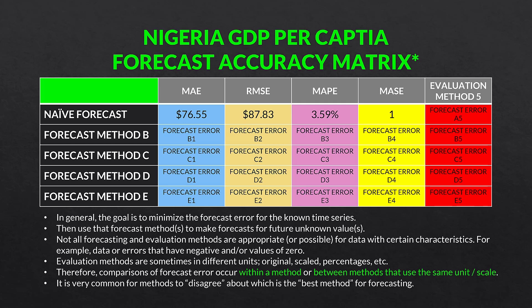Evaluation methods are sometimes in different units — original units like MAE and RMSE, scaled like MASE, or percentages like MAPE. Comparisons of forecast error occur within a method or between methods using the same unit or scale. In the MASE column, the lowest value would be the best. It is common for forecast methods to disagree about which is best — for example, MASE might favor method D while MAPE favors method B. It is up to us as analysts to determine which to use.